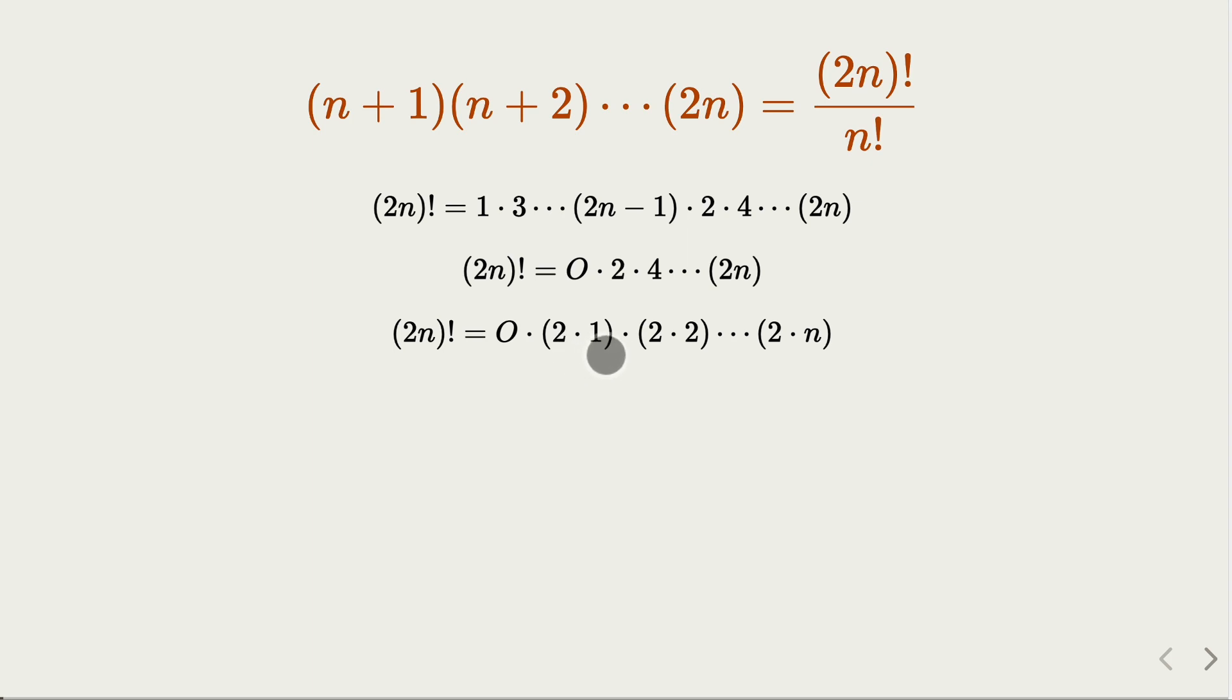So you rewrite it as 2 times 1 times 2 times n. That is how many terms? n terms. And you're going to group 2 to the nth power here. And the remaining one is simply 1, 2, and then up to n. That's n factorial.